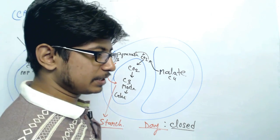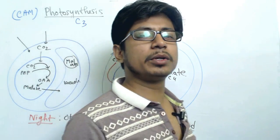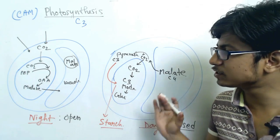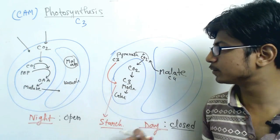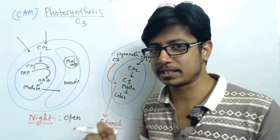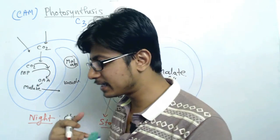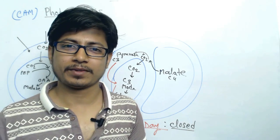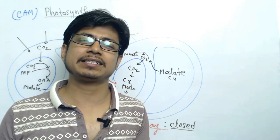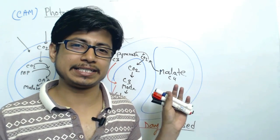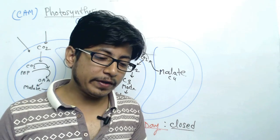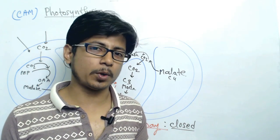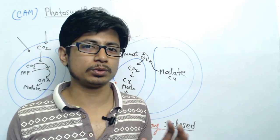This is known as Crassulacean Acid Metabolism or the CAM pathway, and the plants adopting this pathway are known as CAM plants. Examples of CAM plants are generally desert plants like cactus. They utilize the CAM pathway to prevent water loss and to continue the process of photosynthesis.